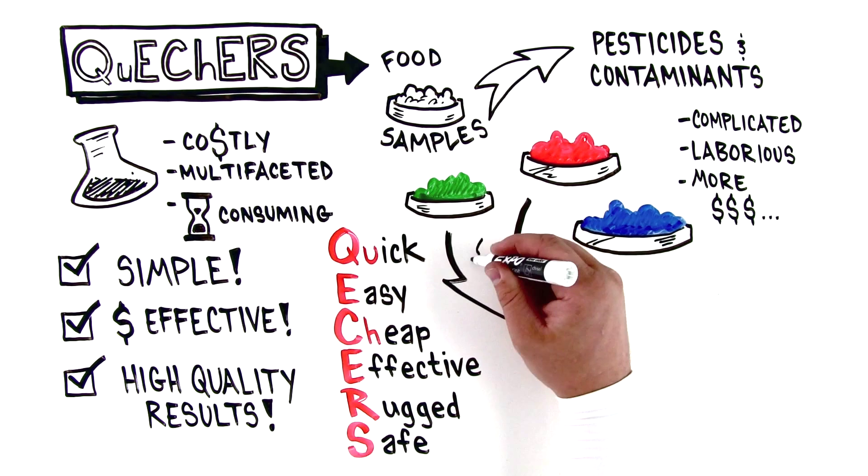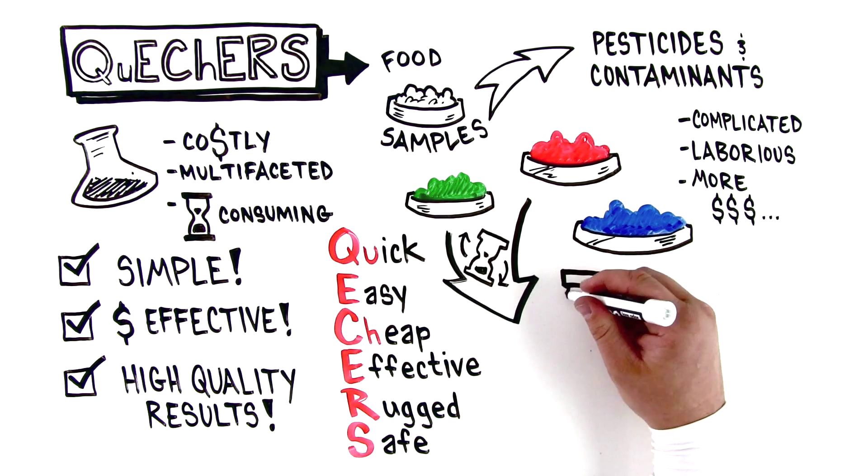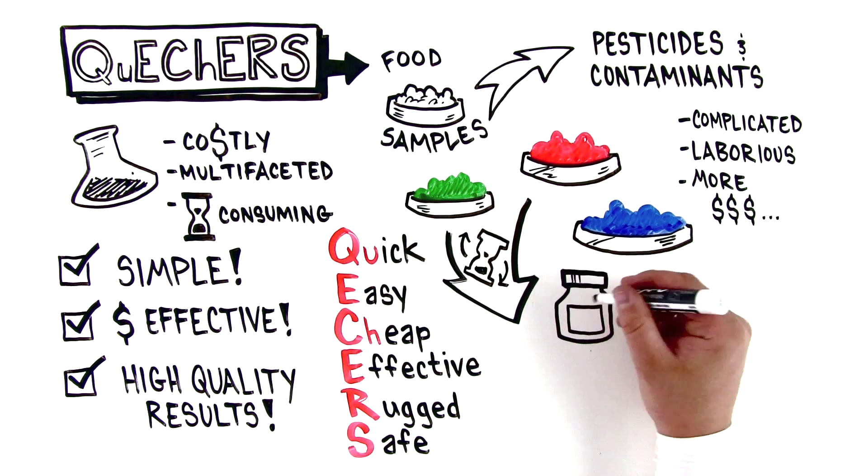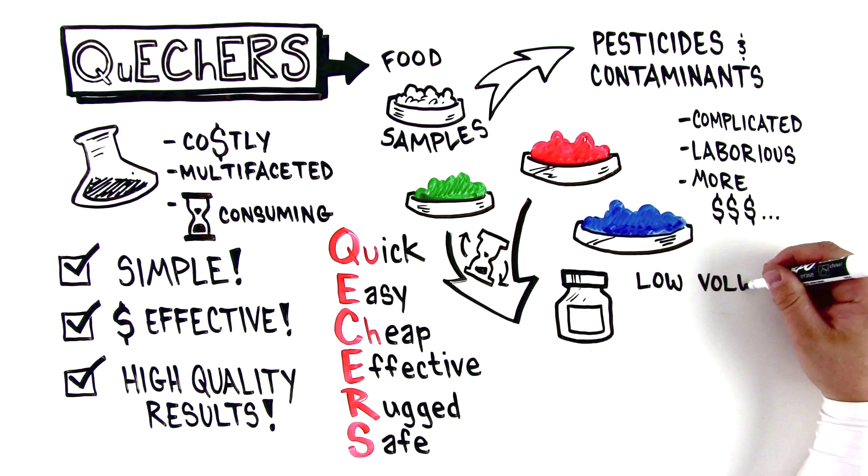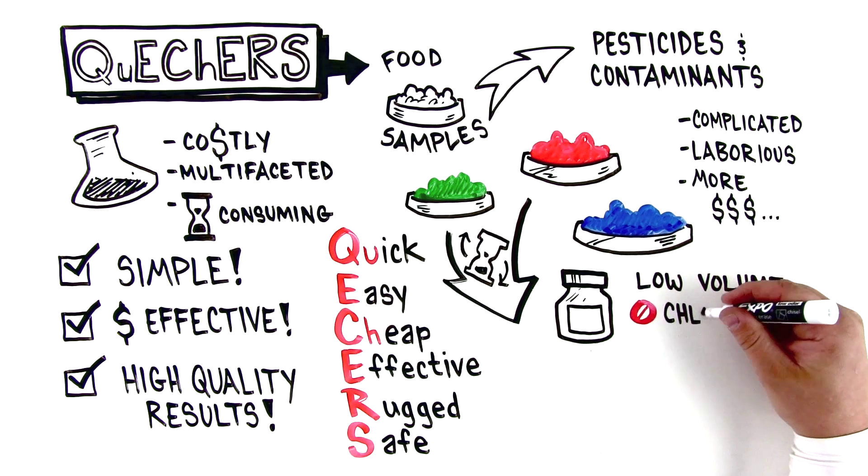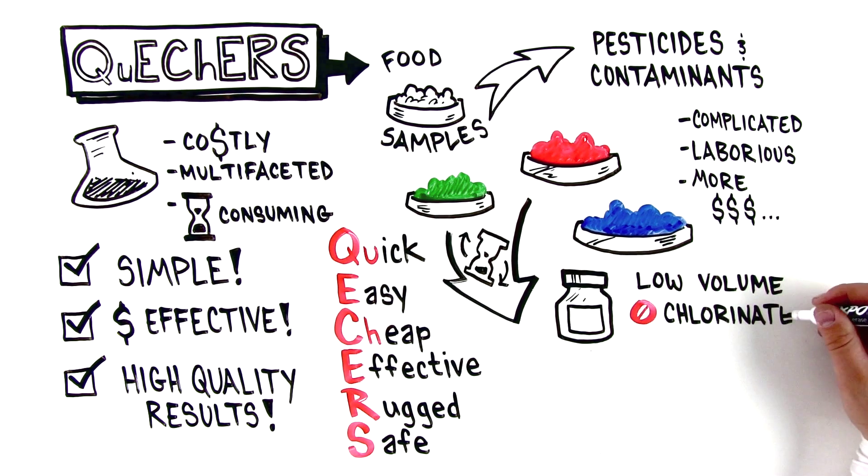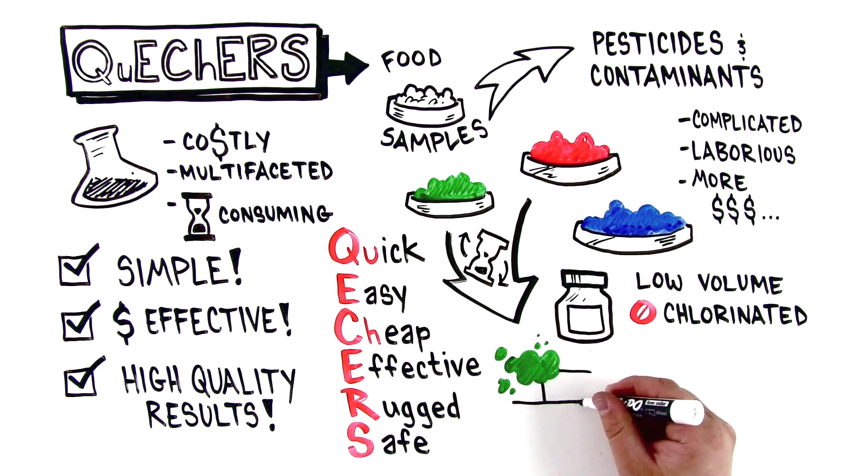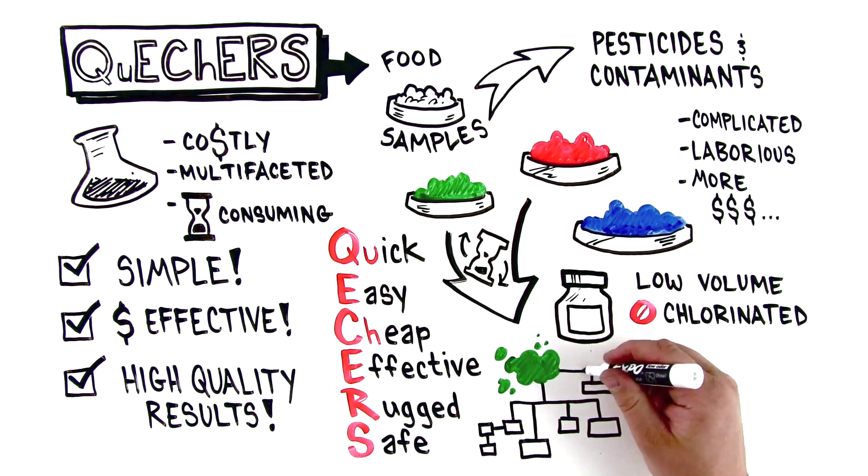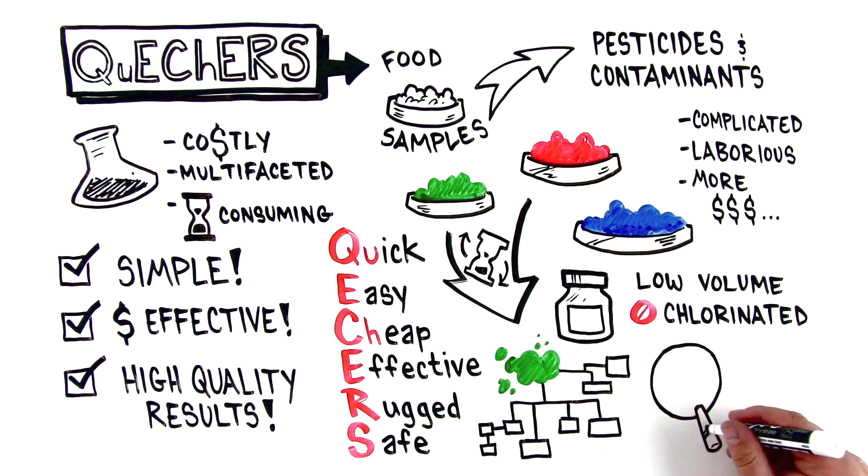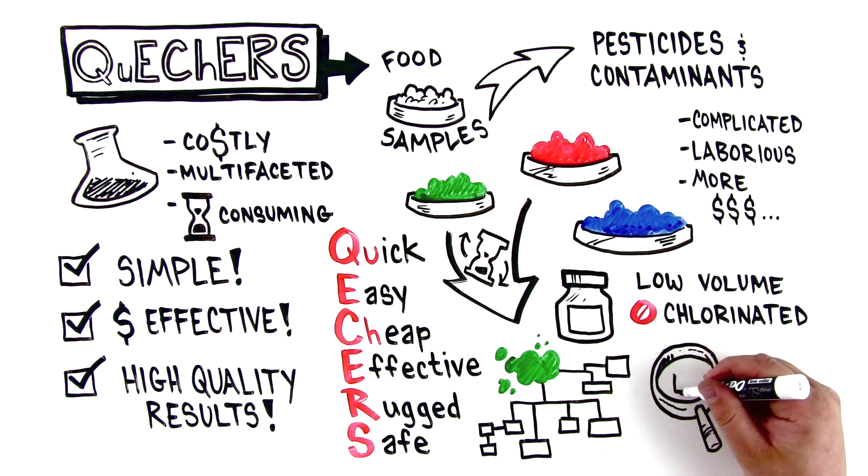The QuEChERS technique allows you to prepare a large number of samples in a short period of time due to the simple process employed. This, in combination with the low volume of solvent used and lack of chlorinated solvents, helps provide an inexpensive method. The technique allows the targeting of a wide range of compounds from various food samples, and provides recovery and reproducibility levels in line with industry requirements.